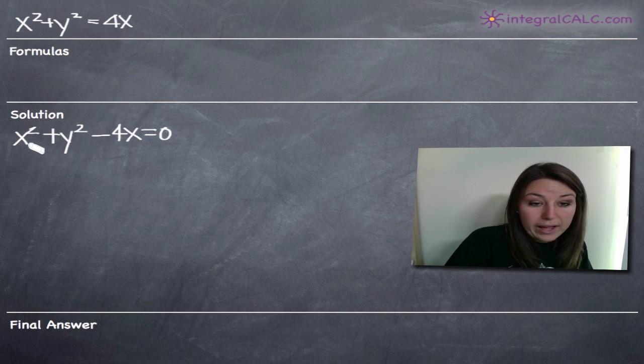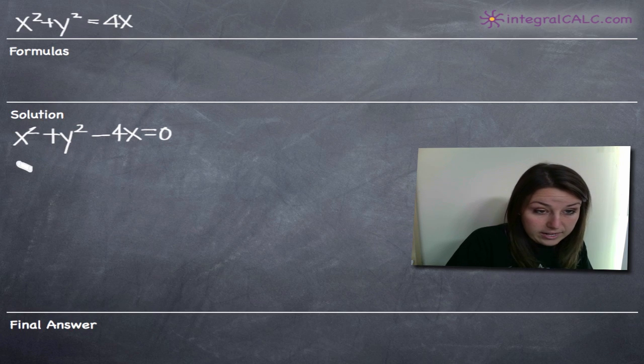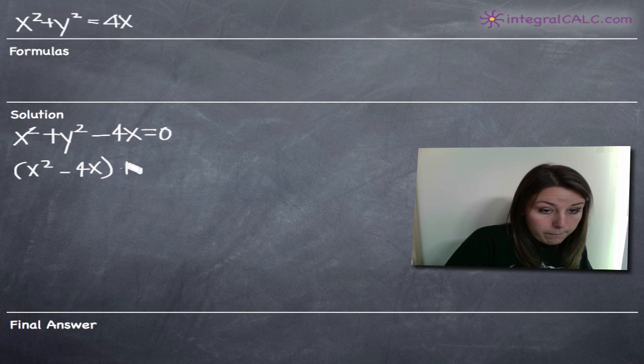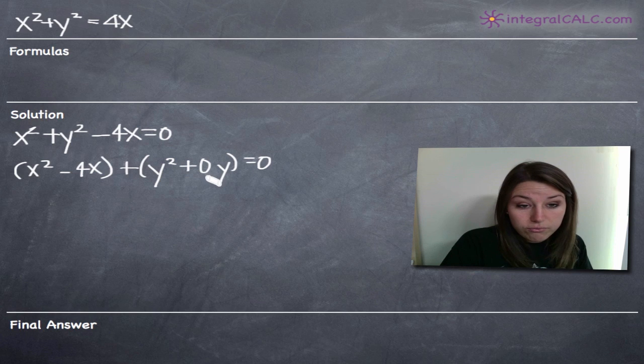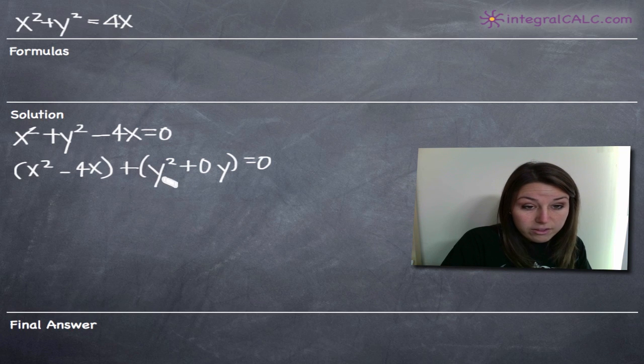Now I want to group my x terms and my y terms together, and I'm also going to add in a y term like this negative 4x term, y to the first, because we're going to need it. This is what that's going to look like: x squared minus 4x, x terms are getting grouped together, plus y squared, and I'm going to add in now plus zero y. You really don't need to, but I think it will make the example easier to follow.